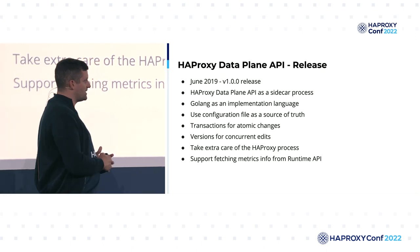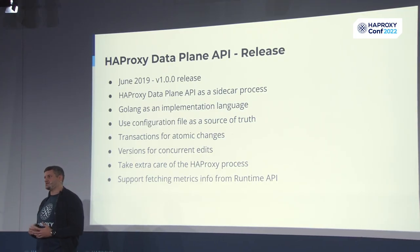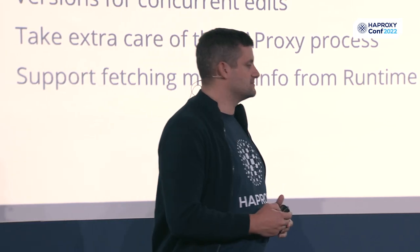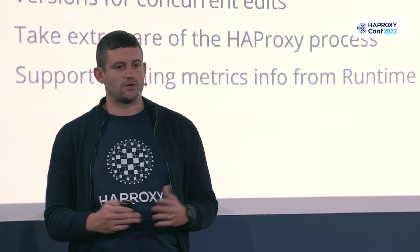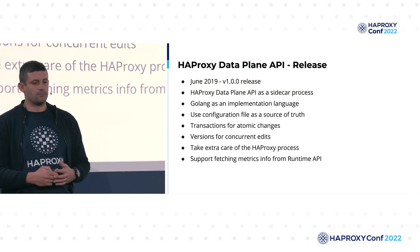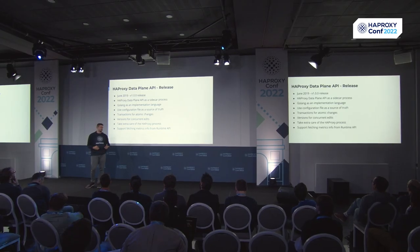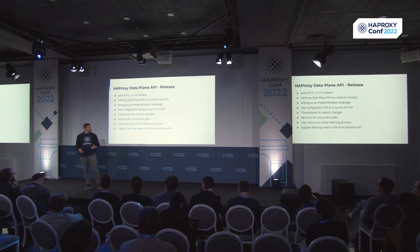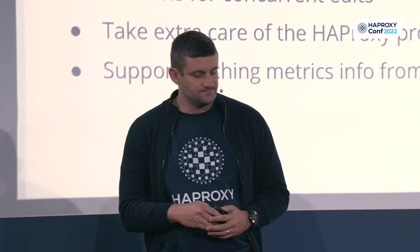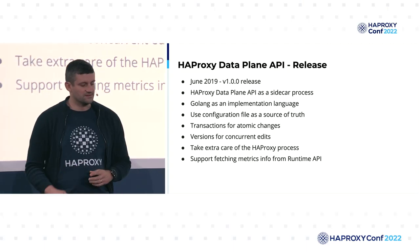We also value not spamming reloads. Data Plane API has a configurable reload timeout. For example, if you have 10 changes in one second, it's not smart to reload 10 times, so you can set a reload timeout and all changes will be applied when the next timeout comes. We try to reload as little as possible, doing all the changes we can through the runtime API to avoid reloading HA Proxy. The first version of the Data Plane API also supported fetching metrics like stats and process info from the runtime API.